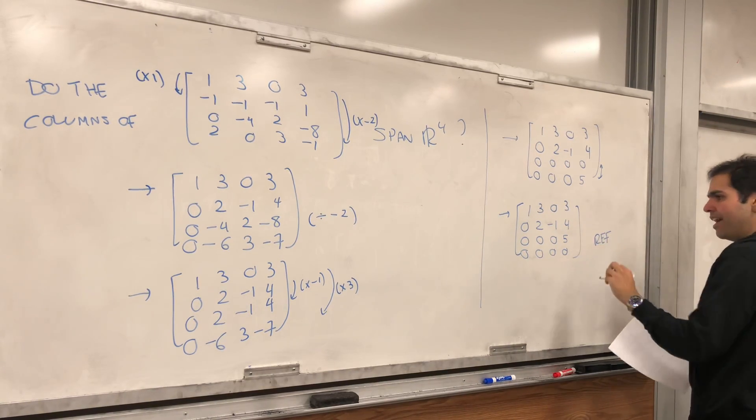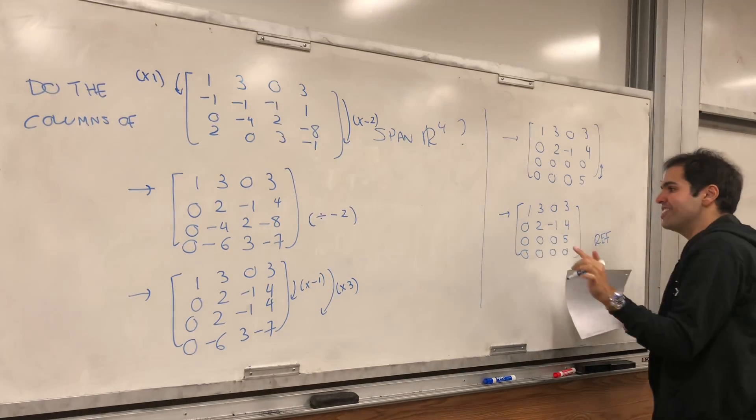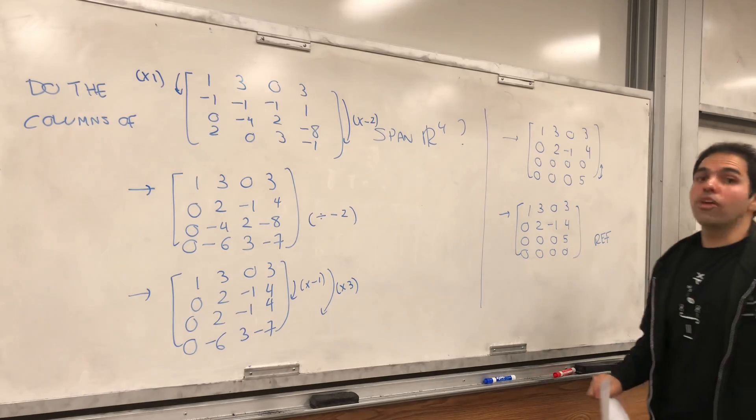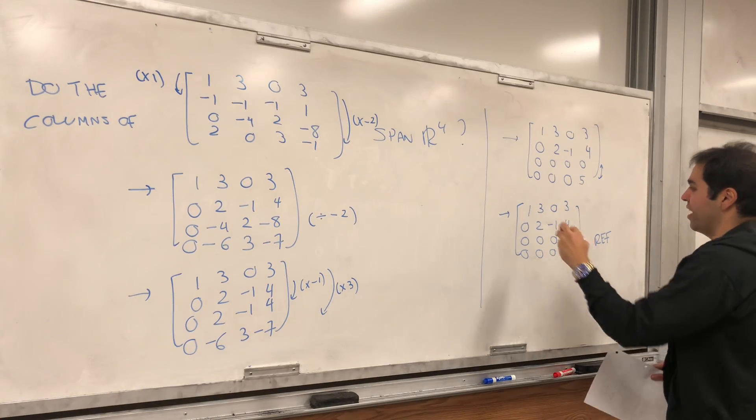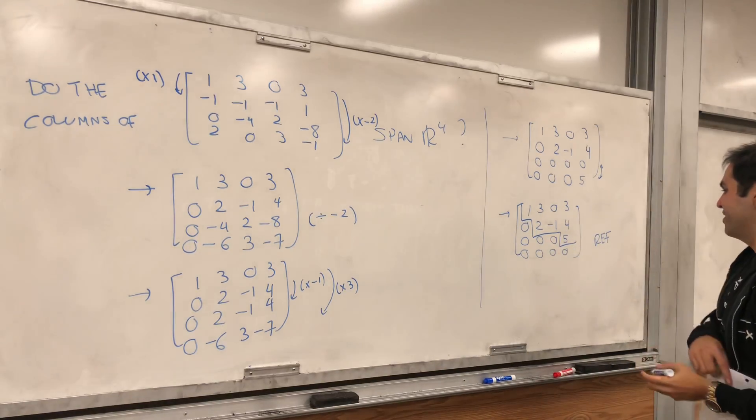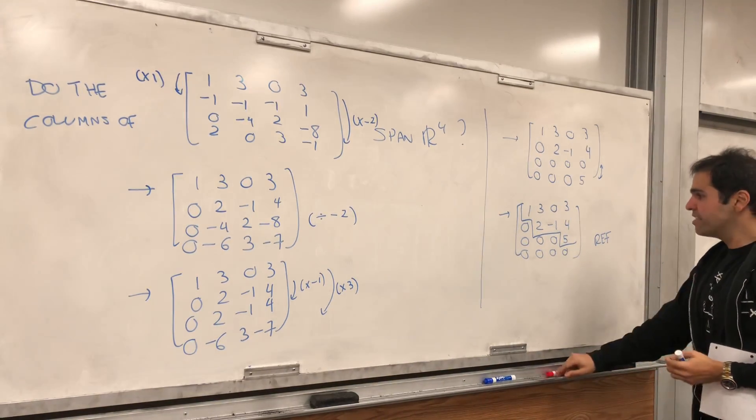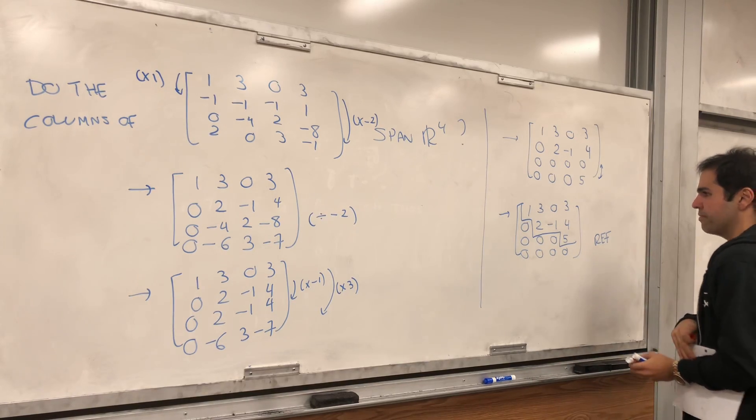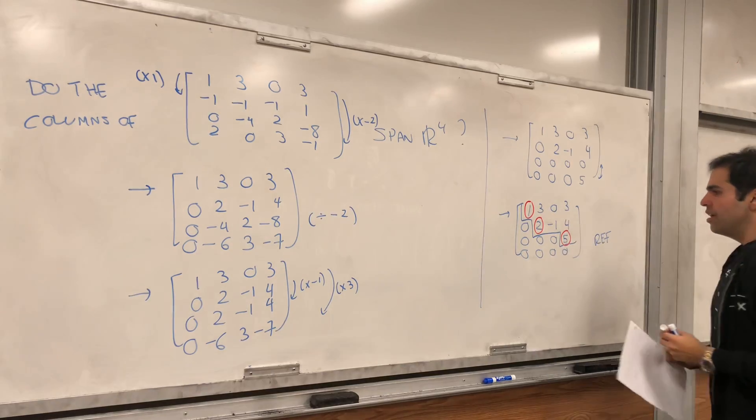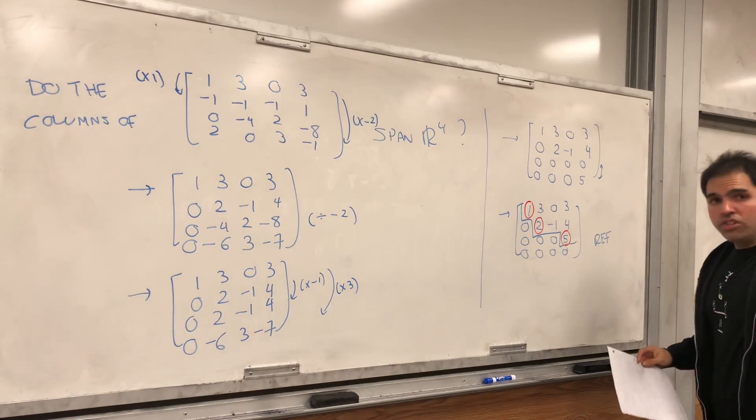And careful, this is just a coefficient matrix, it's not the augmenting matrix, so don't be already like, oh, it's inconsistent, not quite. It is true in the end, but be very careful, so the pivots are one, two, five.